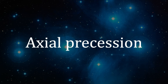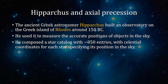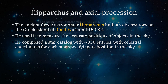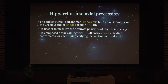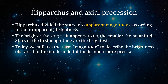Now I want to talk about an important concept called axial precession. The ancient Greek astronomer Hipparchus built an observatory on the Greek island of Rhodes around 150 BC. He measured the accurate positions of objects in the sky and composed a star catalog with around 850 entries, with celestial coordinates — like latitude and longitude, but for the sky — specifying each star's position. Hipparchus also divided stars into apparent magnitudes according to their apparent brightness.